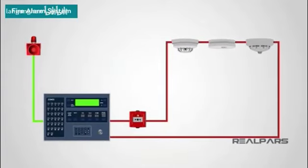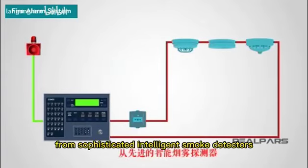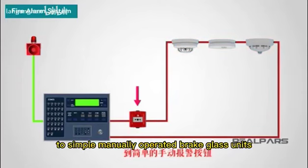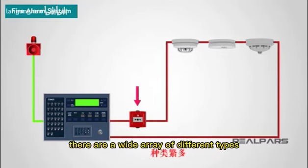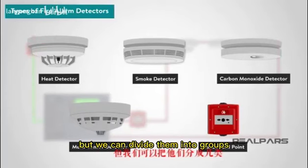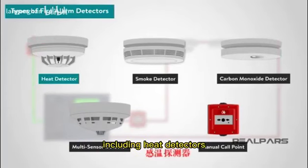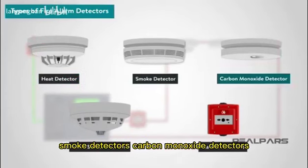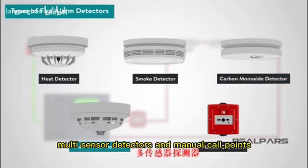At the core of a fire alarm system are the detection devices. From sophisticated intelligent smoke detectors to simple manually operated break glass units, there are a wide array of different types. But we can divide them into groups, including heat detectors, smoke detectors, carbon monoxide detectors, multi-sensor detectors, and manual call points.